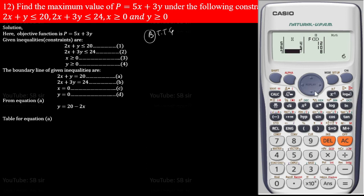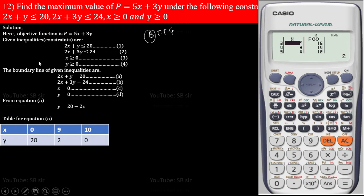From the calculator, for equation A (y = 20 − 2x), the values are: when x = 0, y = 20; when x = 9, y = 2; when x = 10, y = 0. These give us three clear points with integer coordinates that are easy to plot.